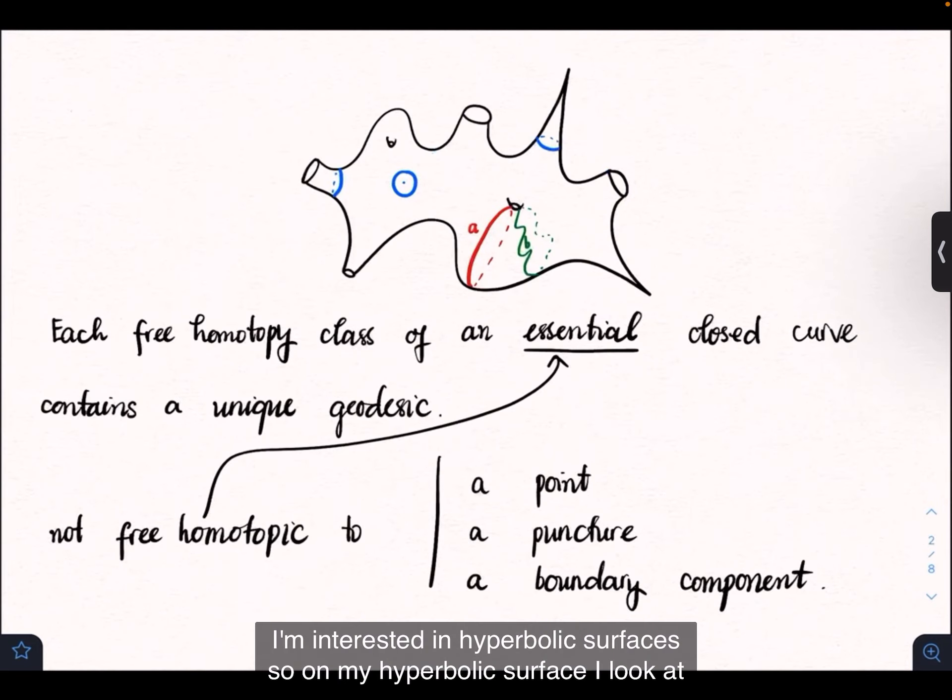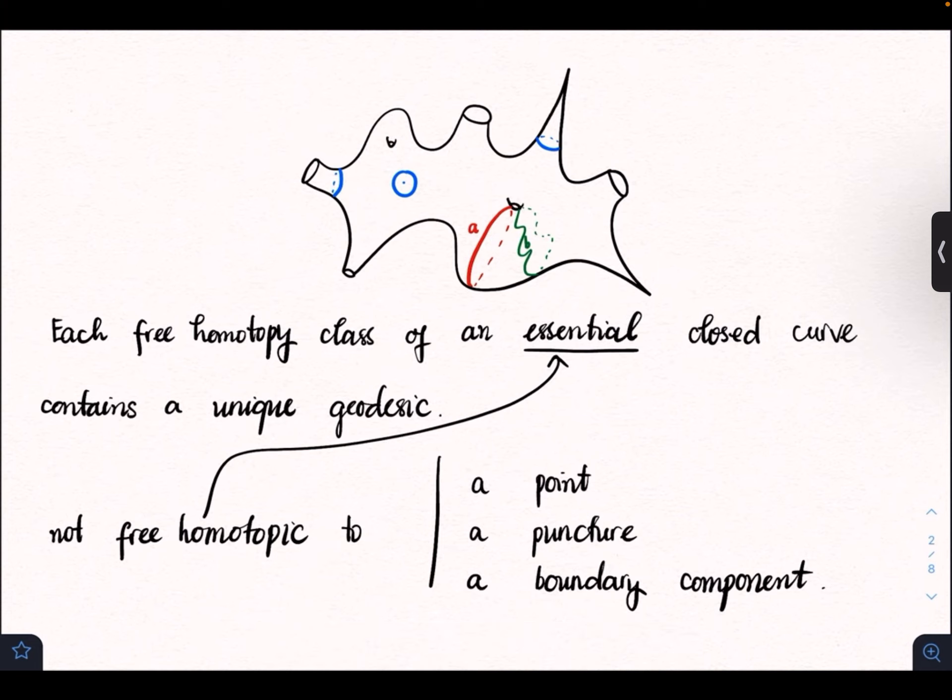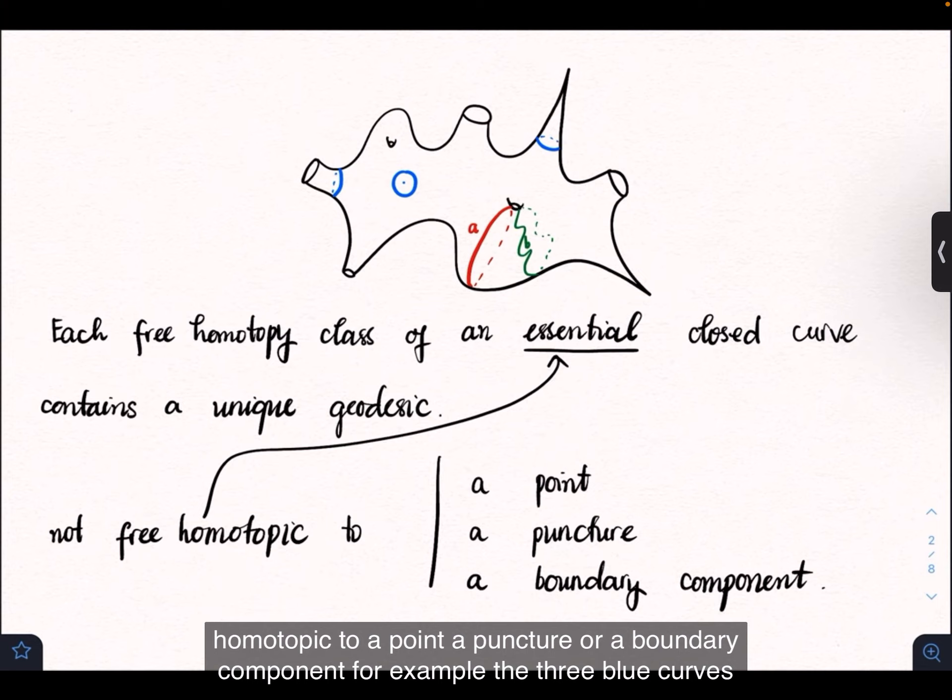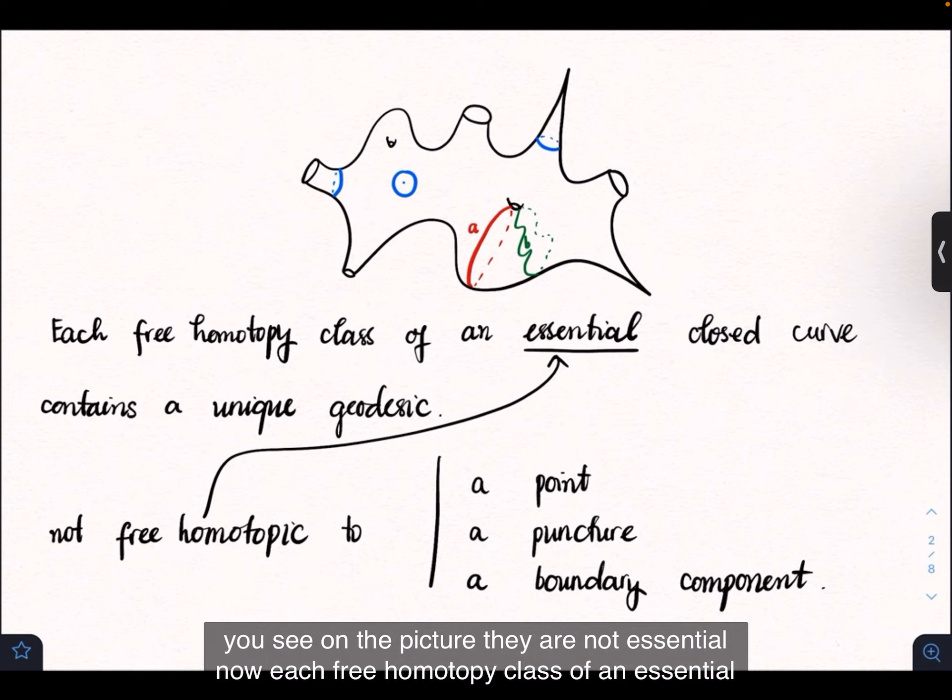I'm interested in hyperbolic surfaces. On a hyperbolic surface, I look at the set of essential closed curves. A closed curve is essential if it is not free-homotopic to a point, a puncture, or a boundary component. For example, the three blue curves you see in the picture are not essential.